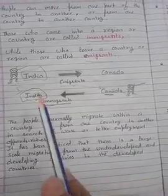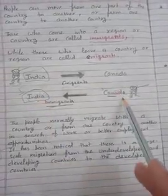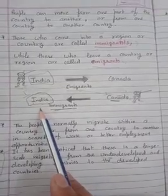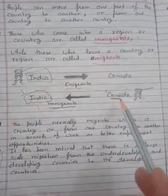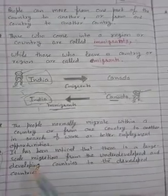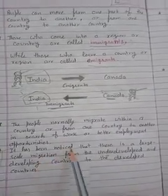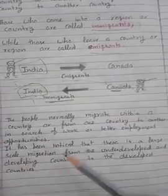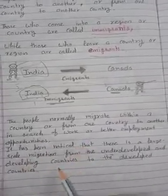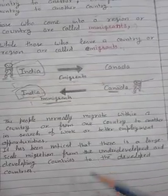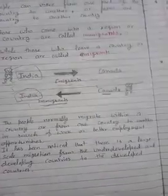For example, many people from India shift to Canada, because India is a developing country while Canada is a developed country. So it has been noted that people tend to migrate from underdeveloped and developing countries toward developed countries.